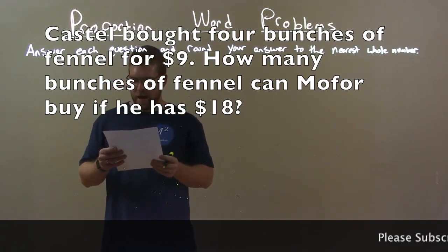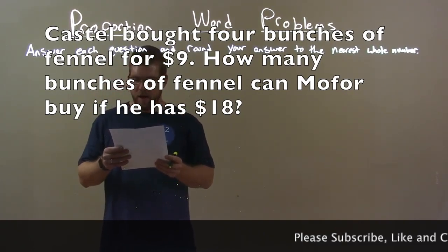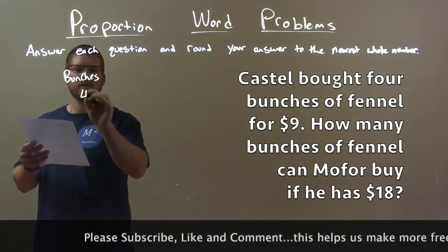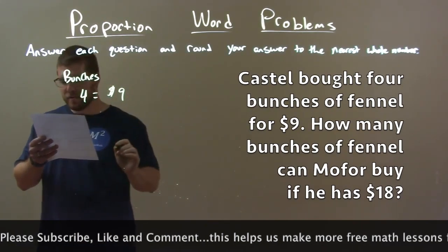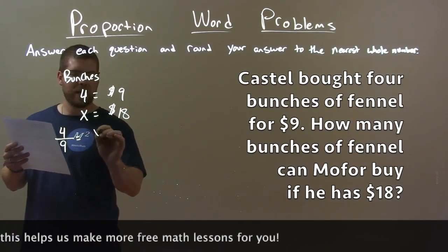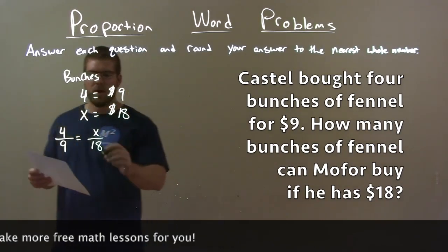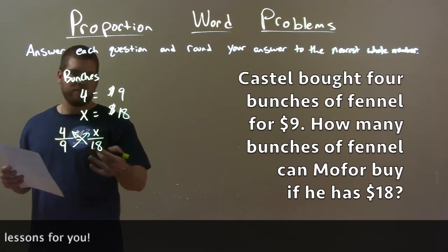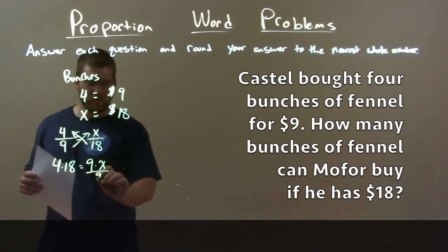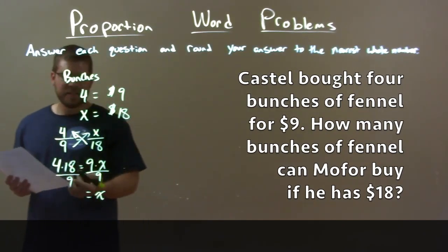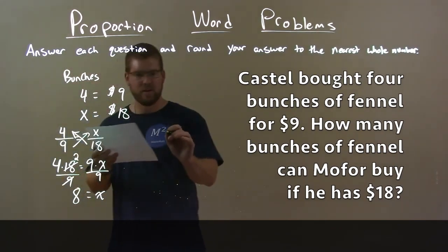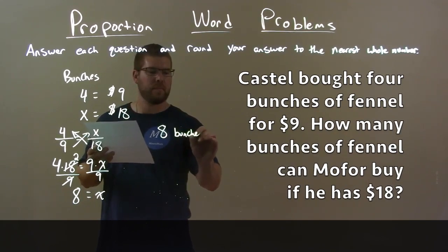Castle bought 4 bunches of fennel for $9. How many bunches of fennel can he buy if he has $18? We know 4 bunches cost $9. Set up a proportion: 4 over 9 equals X over 18. Cross-multiply: 4 times 18 equals 9 times X. Divide both sides by 9 to get X by itself. 18 divided by 9 is 2, and 4 times 2 is 8. Our answer is 8 bunches. So 8 bunches of fennel will cost $18.